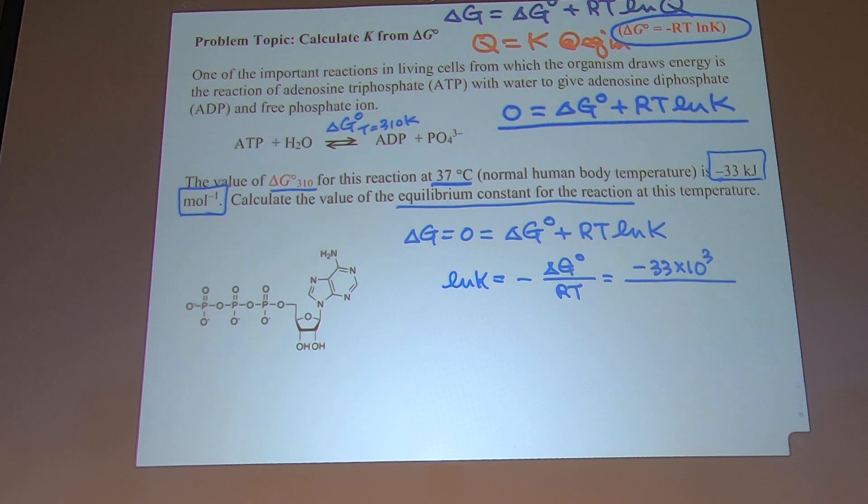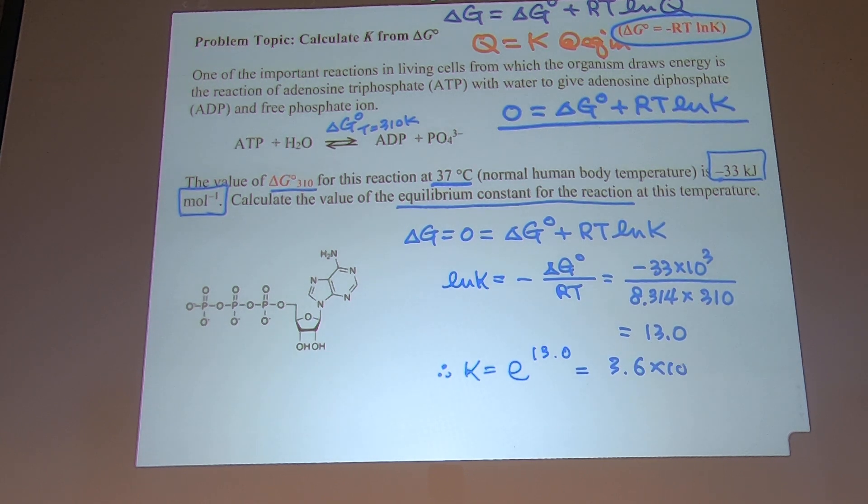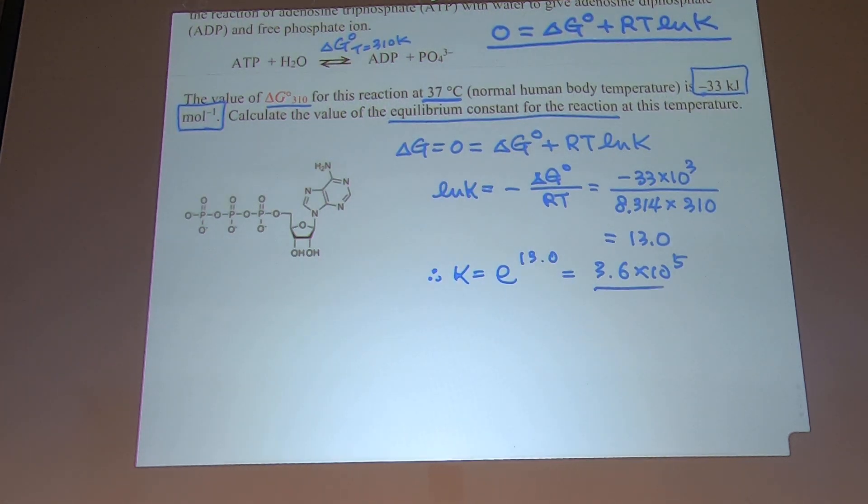Trying to give you extra information on that. At any rate, sorry, let me put a positive number. And then 8.314, and temperature is 310 kelvin. And that's 13.0. So my K value is e to the 13.0. I'll get 3.6 times 10 to the 5.